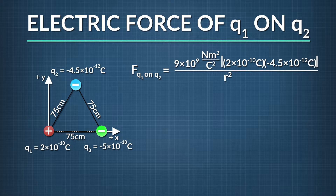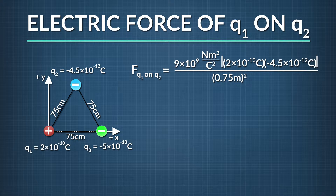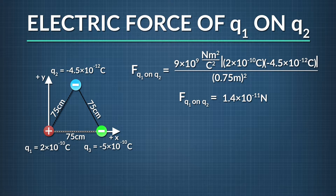All divided by the distance between q1 and q2, r, or 0.75 meters squared. Plugging in these numbers gives us 1.4 times 10 to the negative eleventh newtons.